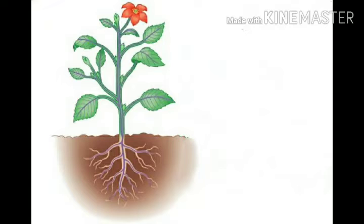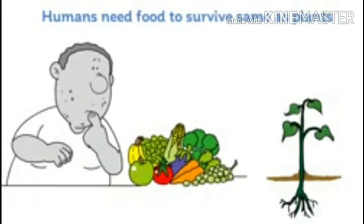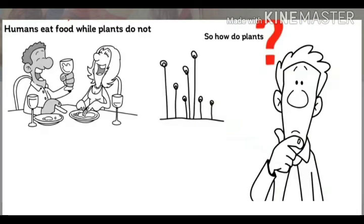How do humans get energy? Humans get energy from food. What are the sources of our food? The sources of food are plants and animals. So humans eat food, while plants do not. So how do plants get food?